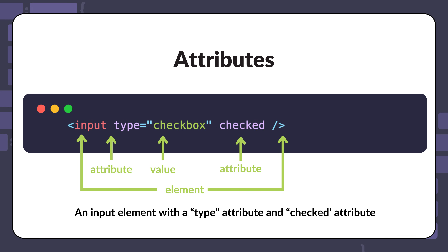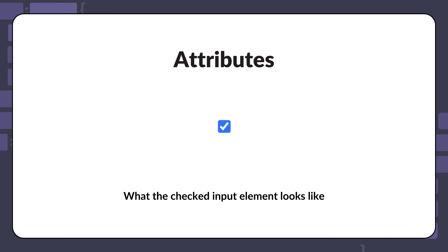Some attributes have unique syntax, like the checked attribute shown here. In the following example, we have an input element with a type attribute set to checkbox. Inputs are used to collect data from users, and the type attribute specifies the type of input. In this case, the input is a checkbox. The checked attribute is used to specify that the checkbox should be checked by default.